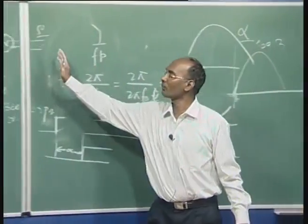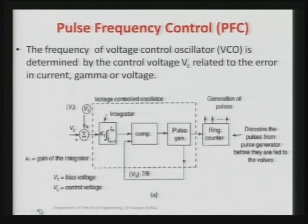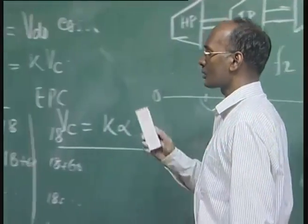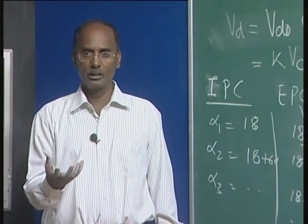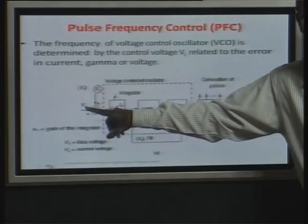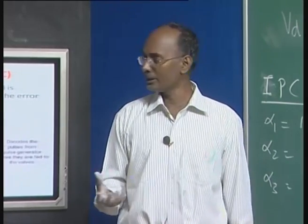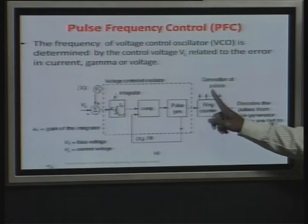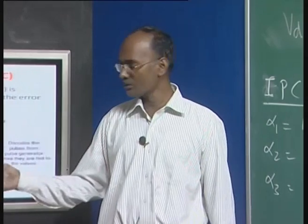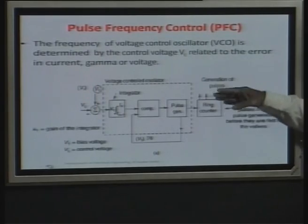This problem only occurs if a power plant is near the HVDC link; otherwise, because of negative damping, there is no problem. Now let us start with pulse frequency control (PFC). The frequency of the voltage-controlled oscillator (VCO) is determined by the control voltage V_C. The VCO comprises an integrator, comparator, and pulse generator. Once it generates pulses, a ring counter shifts them by 60 degrees automatically, since for valve 1 it is alpha, for valve 2 it is alpha+60, for valve 3 it is alpha+120, and so on.